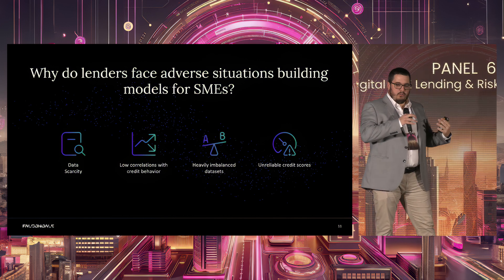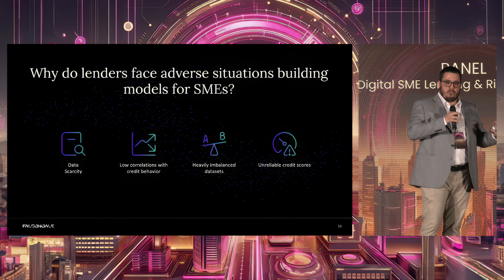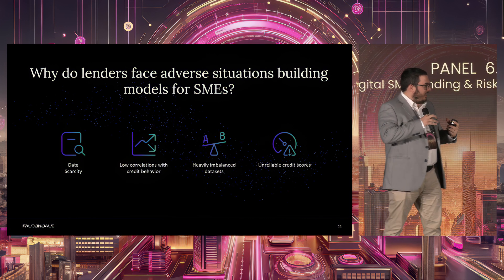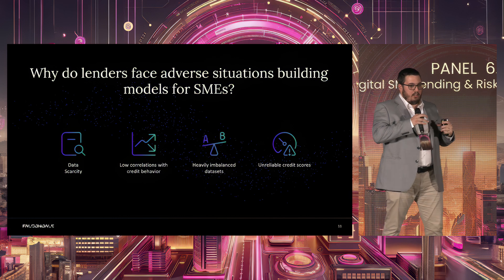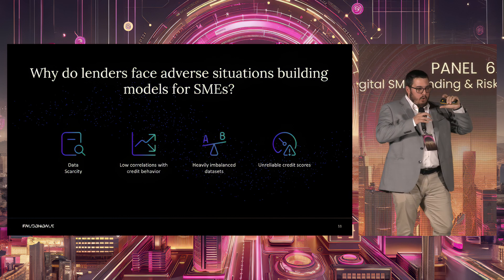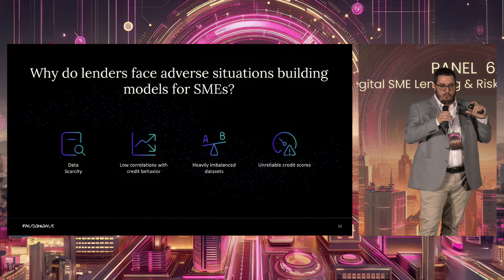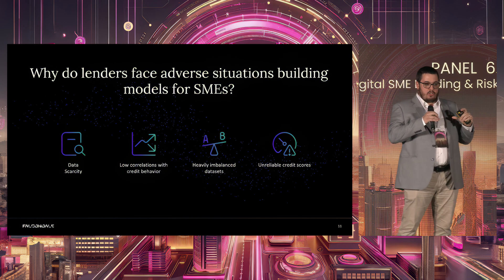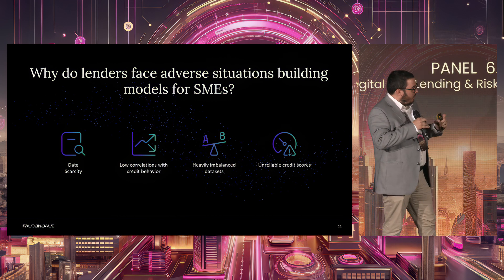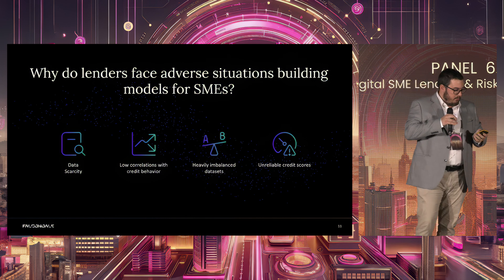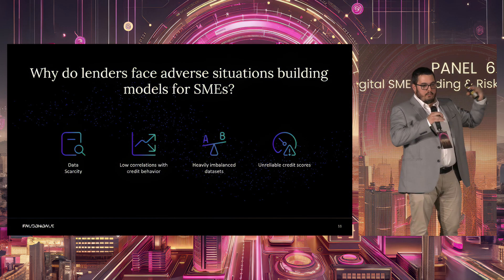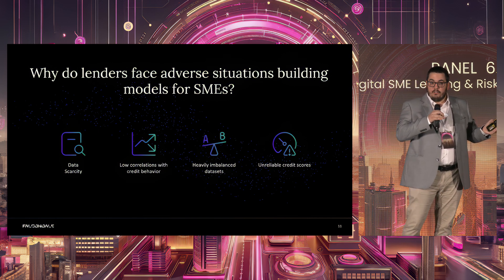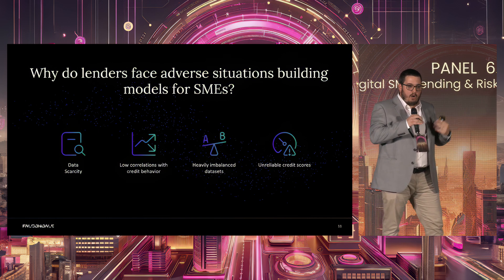We also have low correlations with credit behavior — the data we have is not very predictive about whether companies are going to pay or not. And we have heavily imbalanced datasets: a lot of good payers, a small part of bad payers, but that small part could be really detrimental to our company. Building a model in that situation is tricky. Then we also have unreliable credit scores — picking an off-the-shelf credit score will put you in a situation where you're offering money to companies that don't need it.